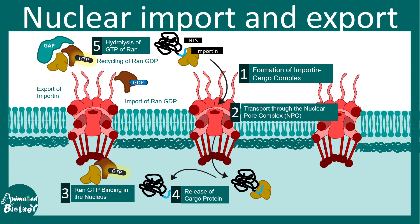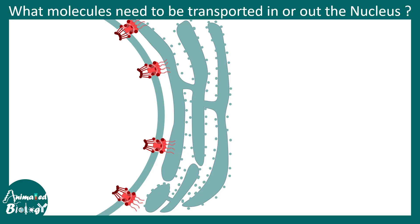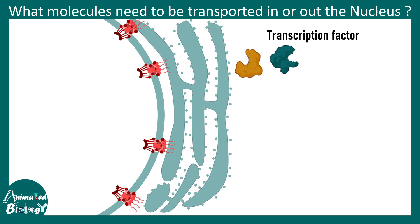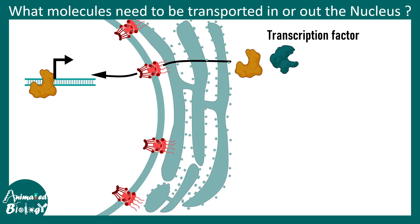In this video, we'll talk about nuclear import and export in detail. What molecules need to be transported across the nucleus — what molecules need to get into the nucleus, or what molecules are to be exported? There are transcription factors which are encoded by the genome but produced in the cytosol on the ribosomes, so they have to be brought into the nucleus in order to do transcription. That requires nuclear import.